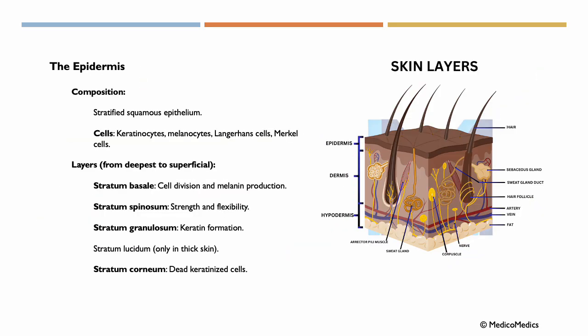So let's begin our journey by diving first into the epidermis. Now its composition, stratified squamous epithelium. So the epidermis is made of multiple layers of flat cells designed to protect the body from environmental damage. We find cells here. So keratinocytes, the primary cells that produce keratin.